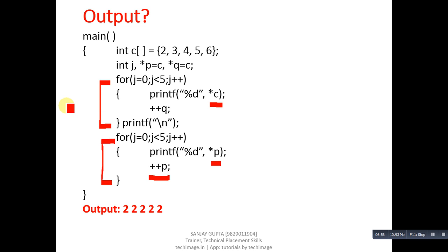Because asterisk c means base address value, that is 2. And second loop will print 2, 3, 4, 5, 6, because asterisk p first time is indicating 2, then p plus plus transfers address to next location. So next location contains 3, then 4, then 5, and then 6.